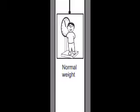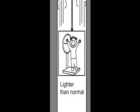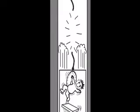In an ascending elevator, your weight increases slightly because of the upward acceleration. In a descending elevator, your weight decreases slightly because of the downward acceleration. If the elevator cables broke, gravity would pull you and the elevator down at the same rate. You would feel weightless, as you are in freefall, experiencing microgravity.